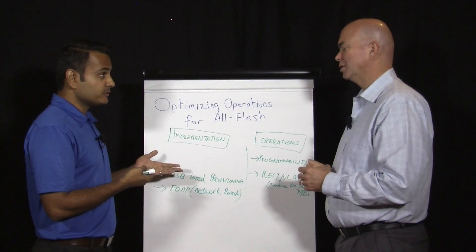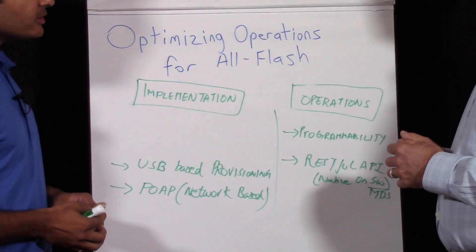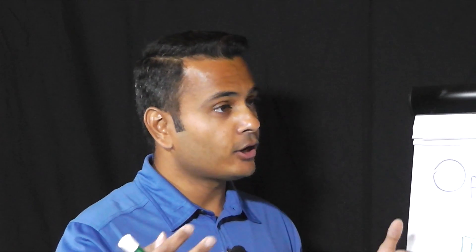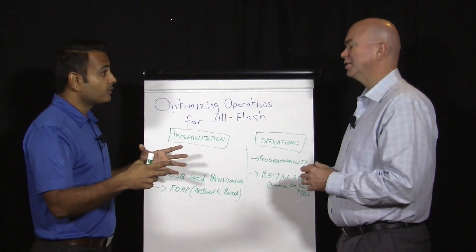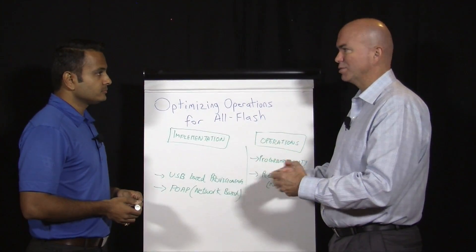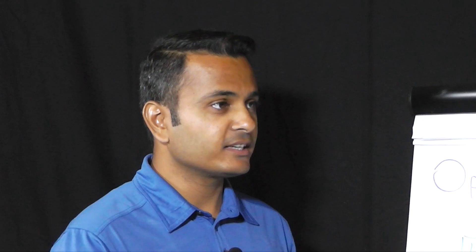We have RESTful APIs on vCenter and on our storage arrays, but what we've done on storage networking is add native RESTful APIs directly on Cisco MDS switches. The application you're writing can make a RESTful API call to the switch, and the switch will make the changes you need. For example, when you provision a new VM or a new LUN, you can make another RESTful API call to the MDS switch to configure the zoning. Now with the RESTful API interface, you can complete that full stack — the network was the missing piece — dramatically improving provisioning times.